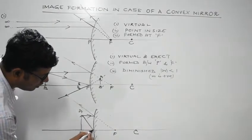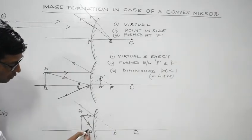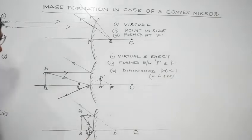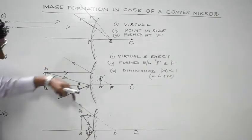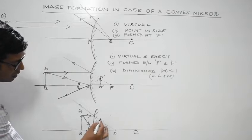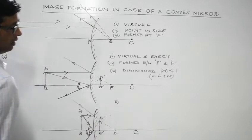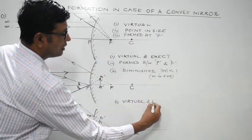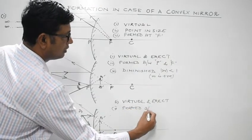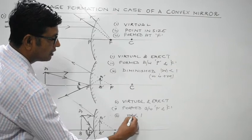For the second ray in case 3, the line joining the center of curvature to a point on the mirror acts as the normal, giving the angle of incidence and angle of reflection — both equal by the law of reflection. These two reflected rays never intersect in the front, so producing them backward gives the image behind the mirror. The image is virtual and erect, formed between P and F, and the size is diminished — m is less than 1 and positive.